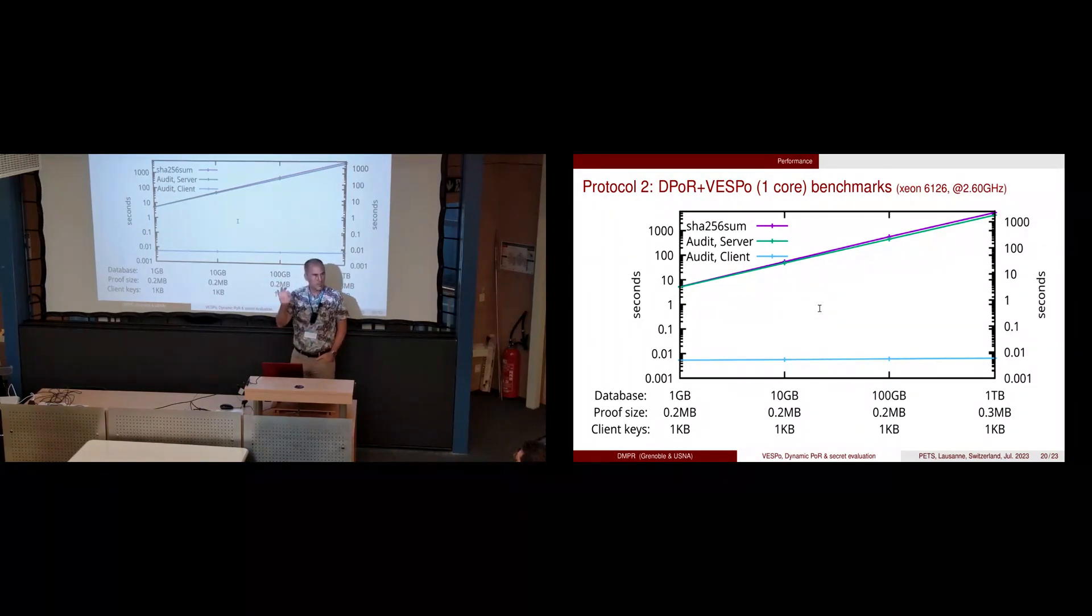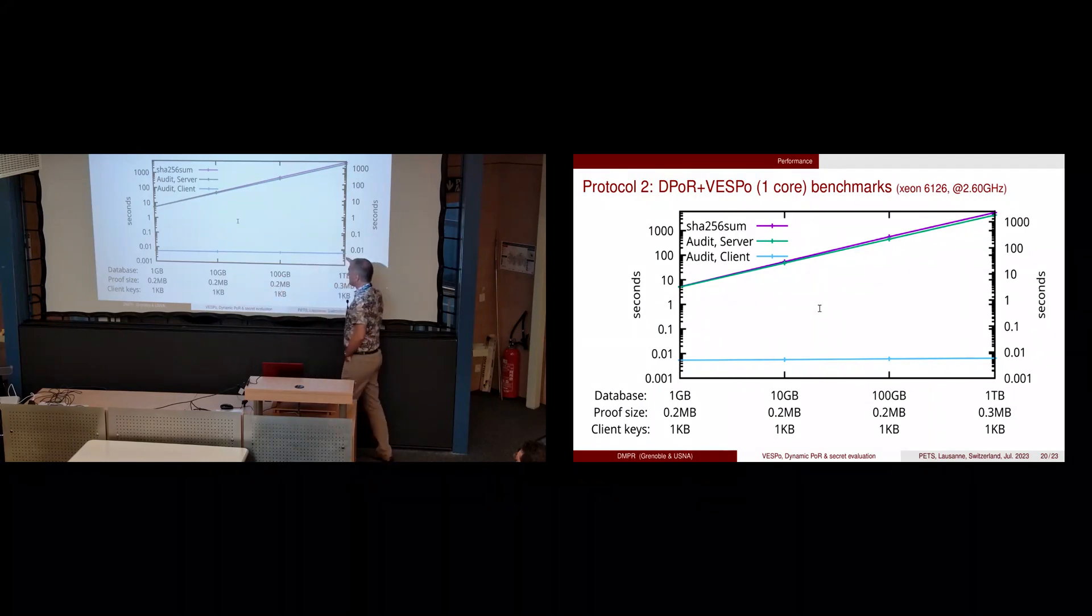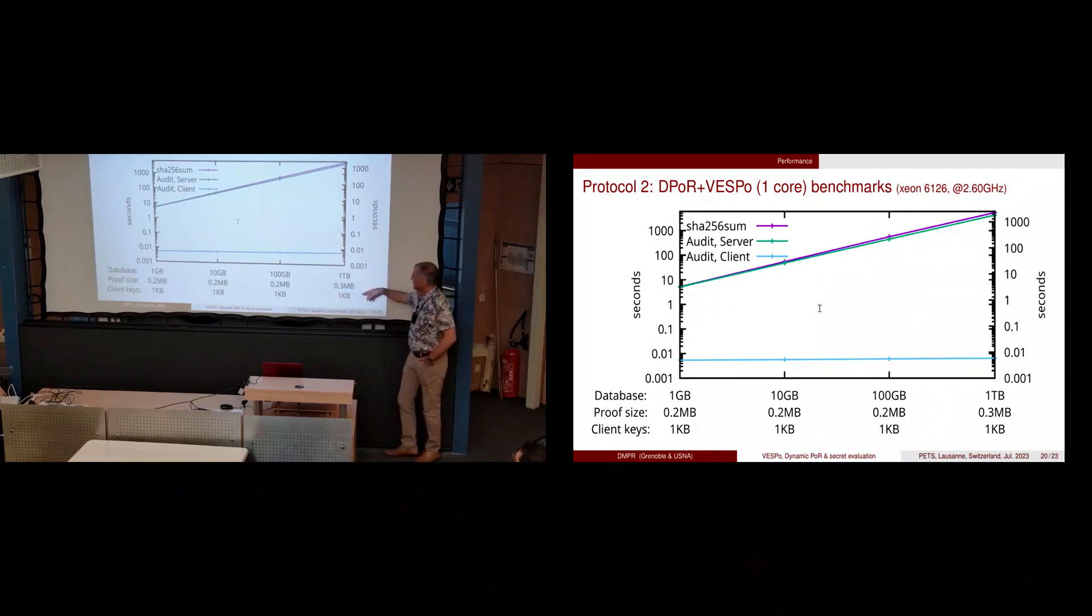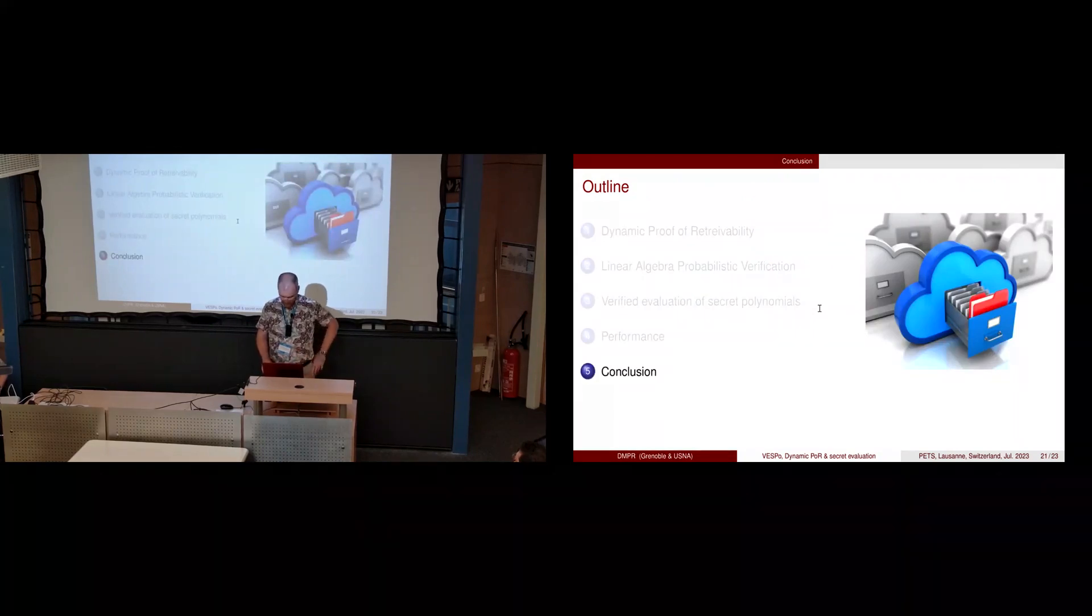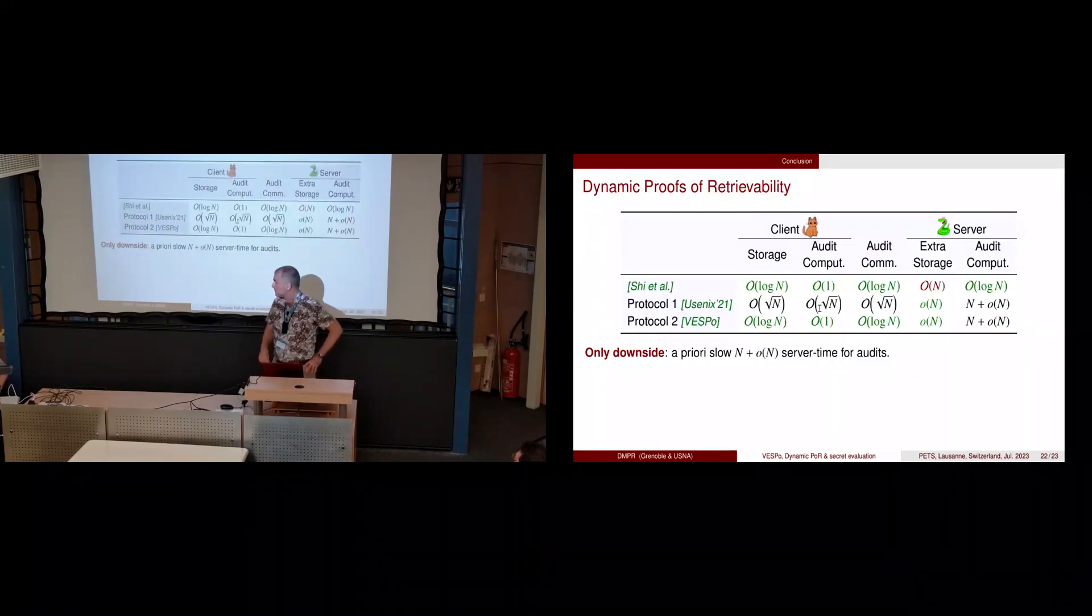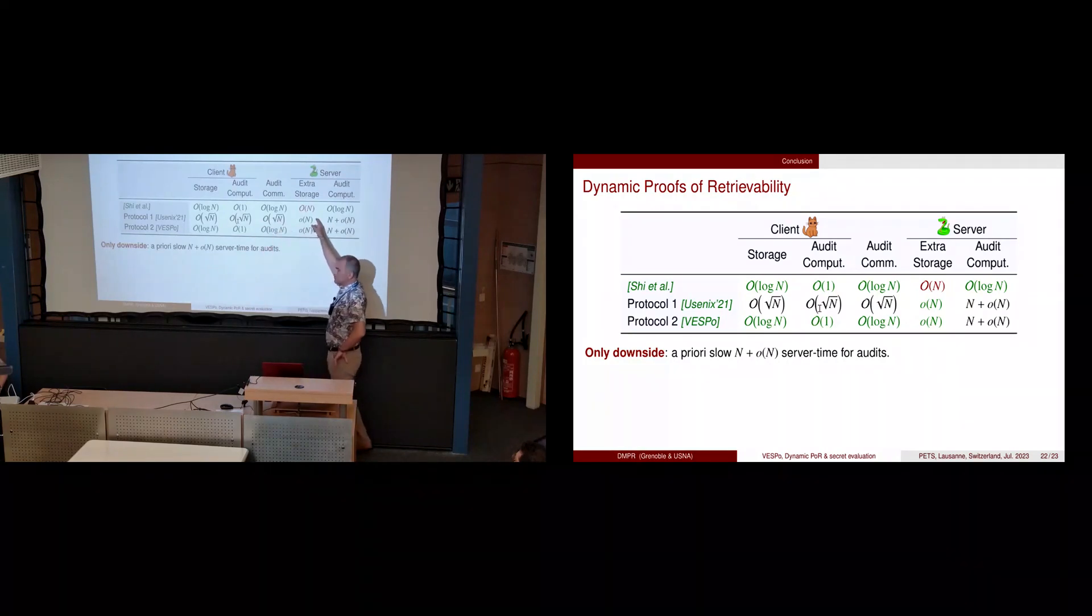The client now is almost constant time, so it's faster even, and the sizes that were something like five megabytes for the proof size and the keys are now much lower, which is what we wanted to do in the first place.